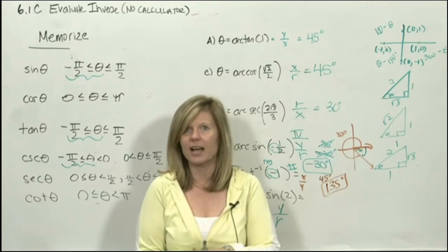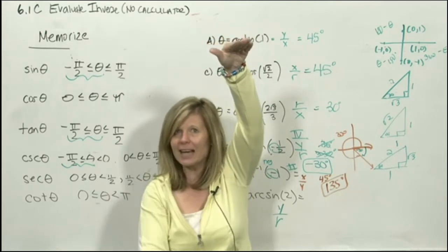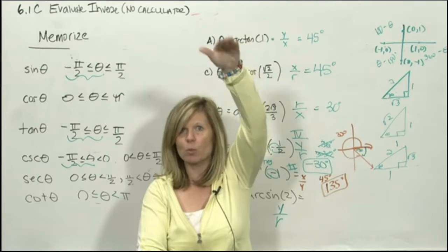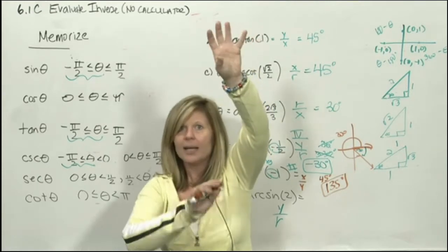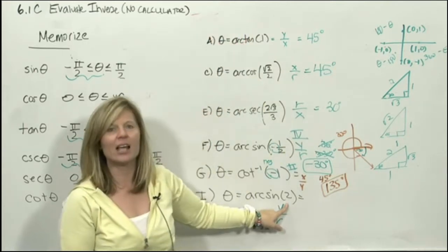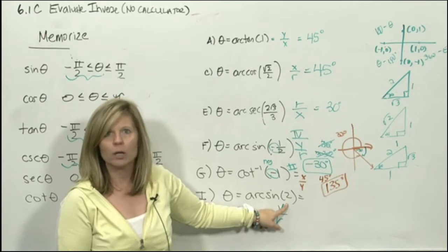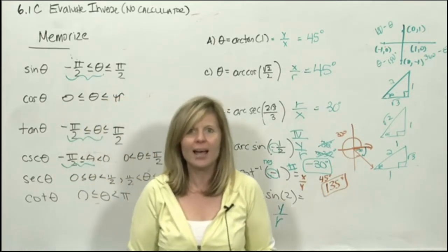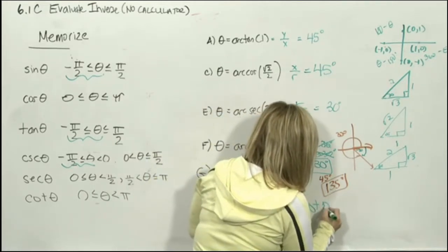When we graph sine, what's the highest number sine can have? One. What's the lowest? Negative one. A normal sine curve goes between 1 and negative 1 — sine can never have a number bigger than 1. So even if you typed this into a calculator, it would say you can't do it. This is not possible.